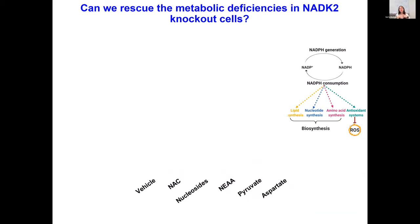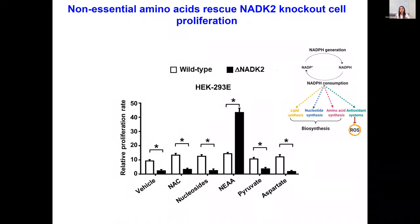We were very curious whether we could rescue NADK2 knockout cells with metabolic intermediates that depend on NADPH. We took NADK2-deficient cells and gave them a bunch of supplements thought to depend on NADPH: N-acetylcysteine (NAC) to fight ROS, nucleosides or nucleobases to replenish nucleotide content, non-essential amino acids, as well as pyruvate and aspartate to support mitochondrial metabolism. Out of all these different agents, we found that only addition of non-essential amino acids was able to completely rescue the proliferation of NADK2-deficient cells.